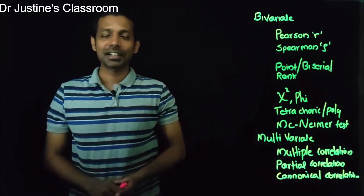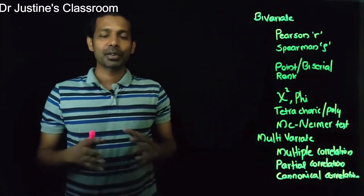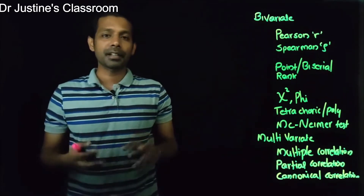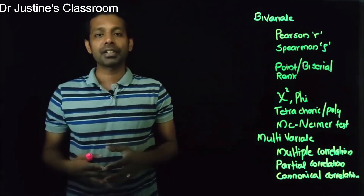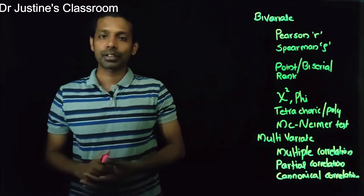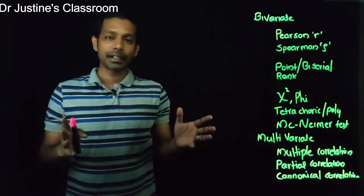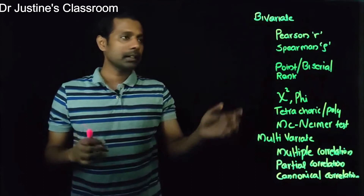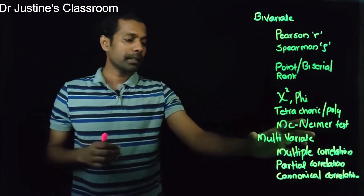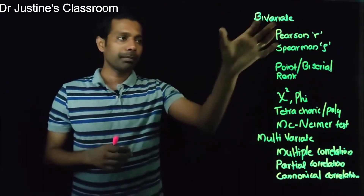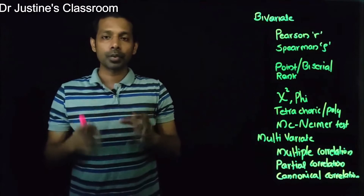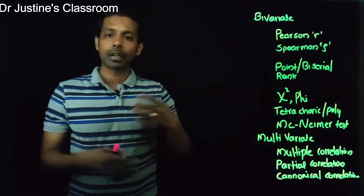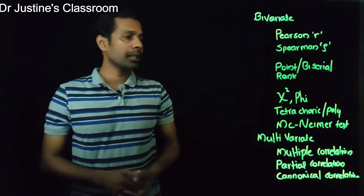Welcome back to my classroom, this is Justin. Today I'm going to talk about types of correlation and its application — that means under which condition which particular test can be used. I have divided them into two categories: one is bivariate, and another one is multivariate. Bivariate means you deal with two variables at a time; multivariate means you may have multiple variables.